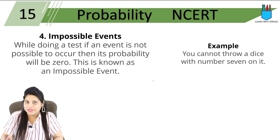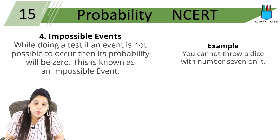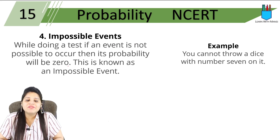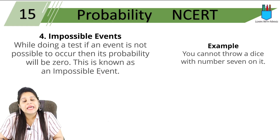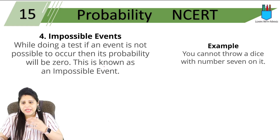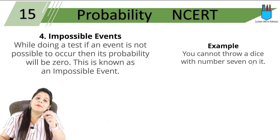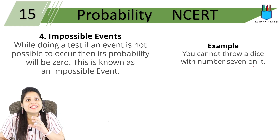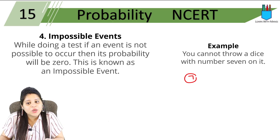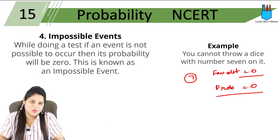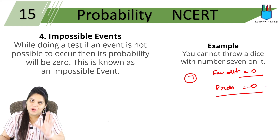Next is the impossible event. An impossible event means that when performing an experiment, if an event is not possible to occur, then its probability will be 0. This is known as an impossible event. For example, you cannot throw a dice and get the number 7. If I ask: what is the probability of getting 7 on a standard dice? It doesn't happen — so our favorable outcome will be 0.